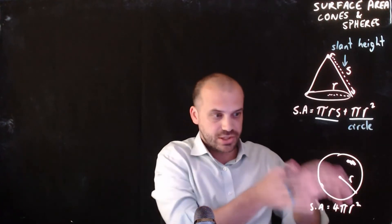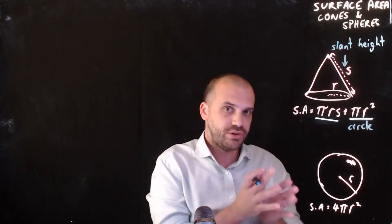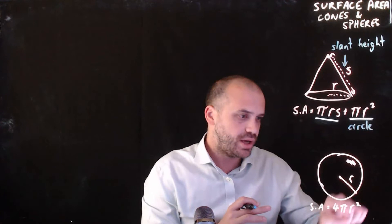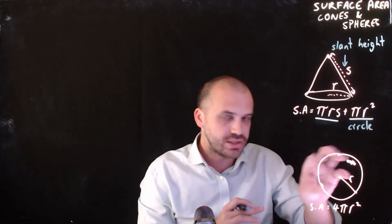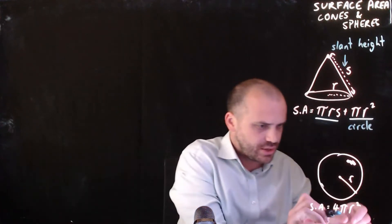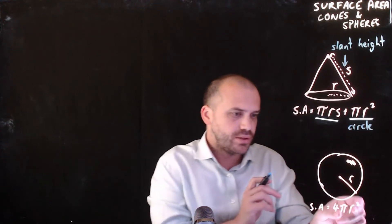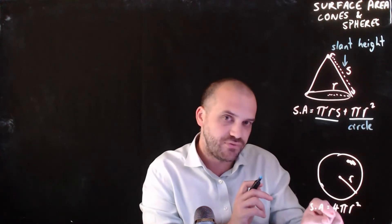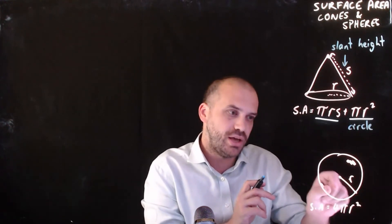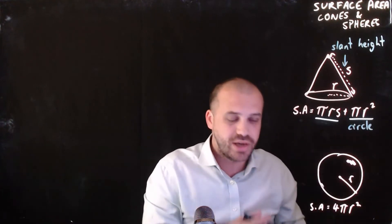Okay, this one here, the sphere, that formula is just very self-contained, 4 pi r squared. If this is a sphere, you can see this is the area of a circle. The surface area of a sphere is 4 times whatever a circle with the same radius would be.